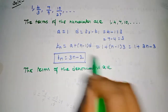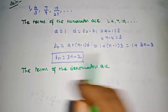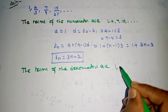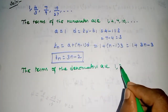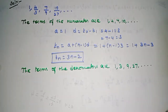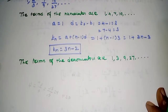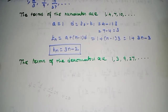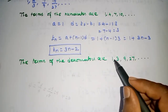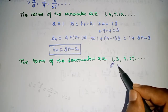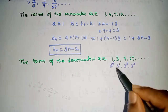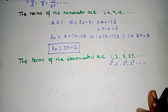Now for the denominator, the terms are 1, 3, 9, 27, and so on. This is a GP: 3^0, 3^1, 3^2, 3^3, and so on up to the nth term. So the denominator terms form a geometric progression.